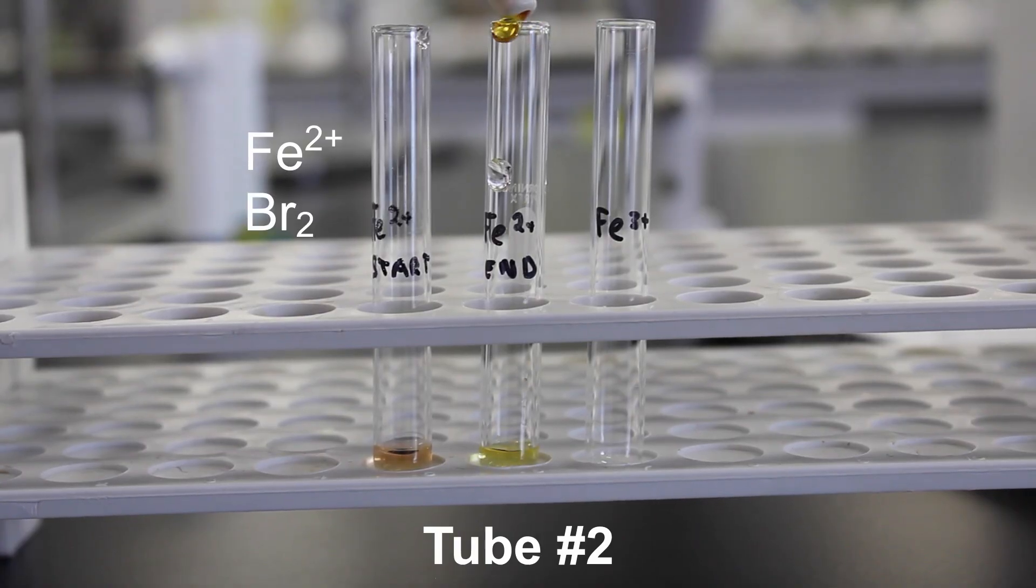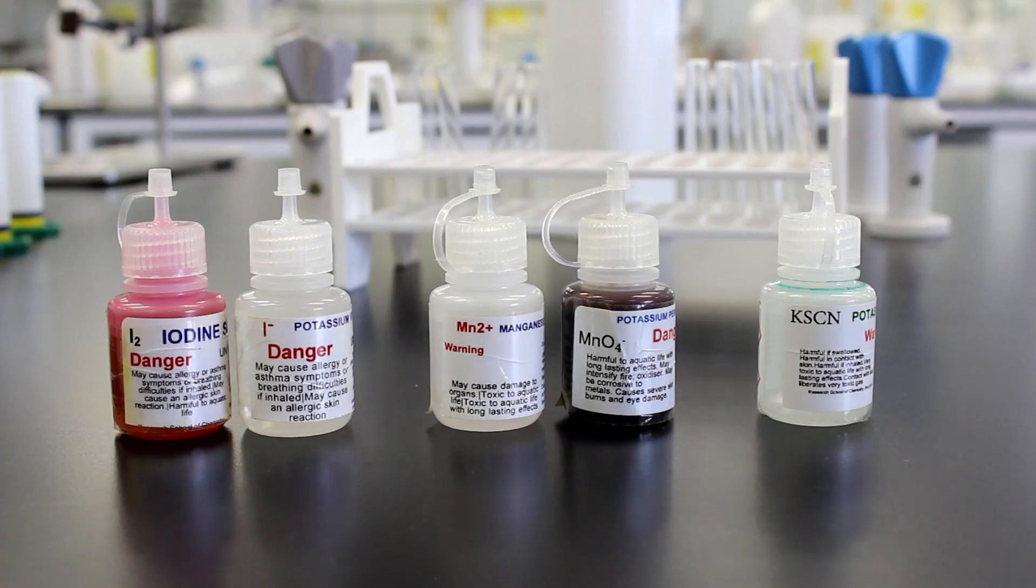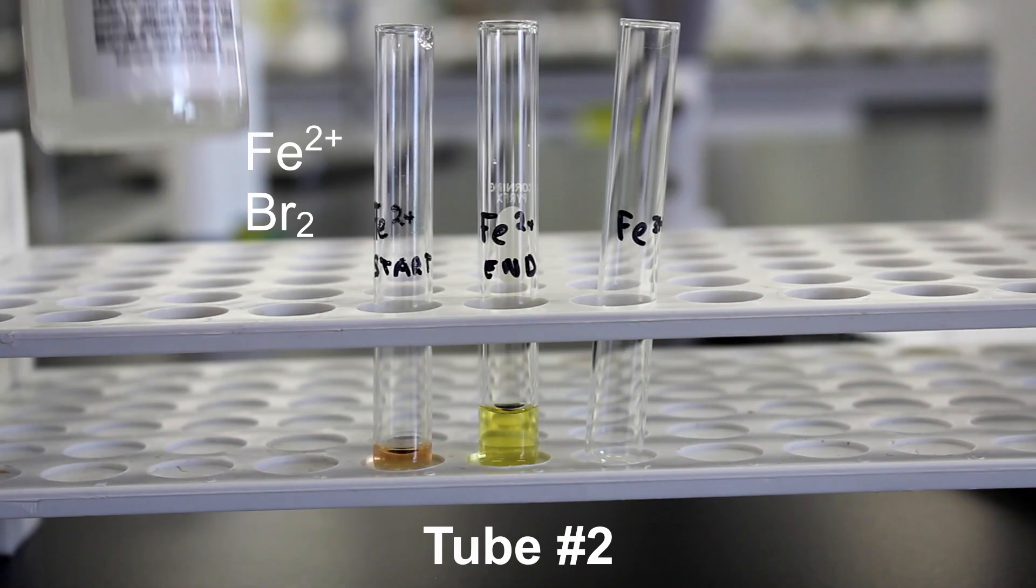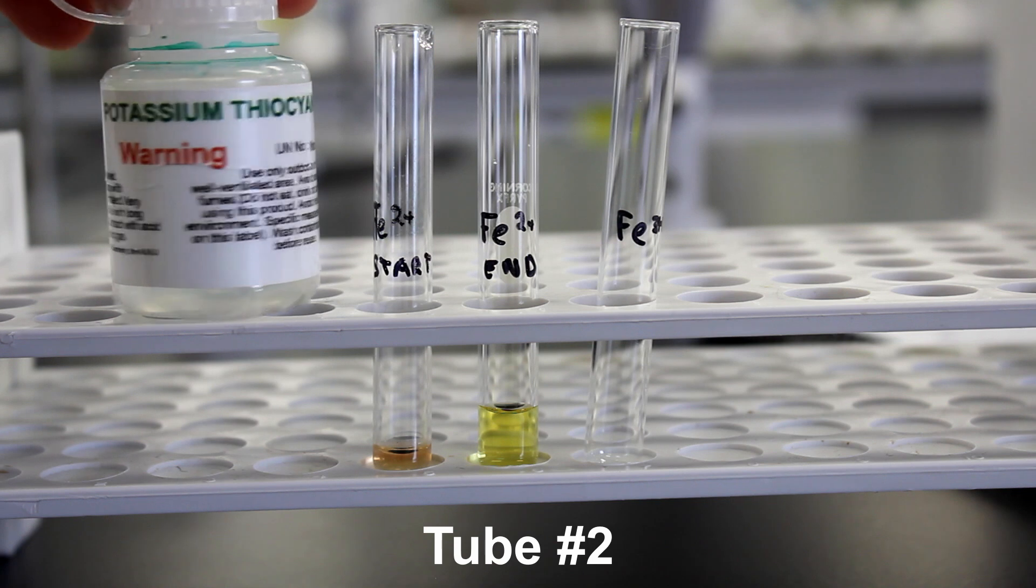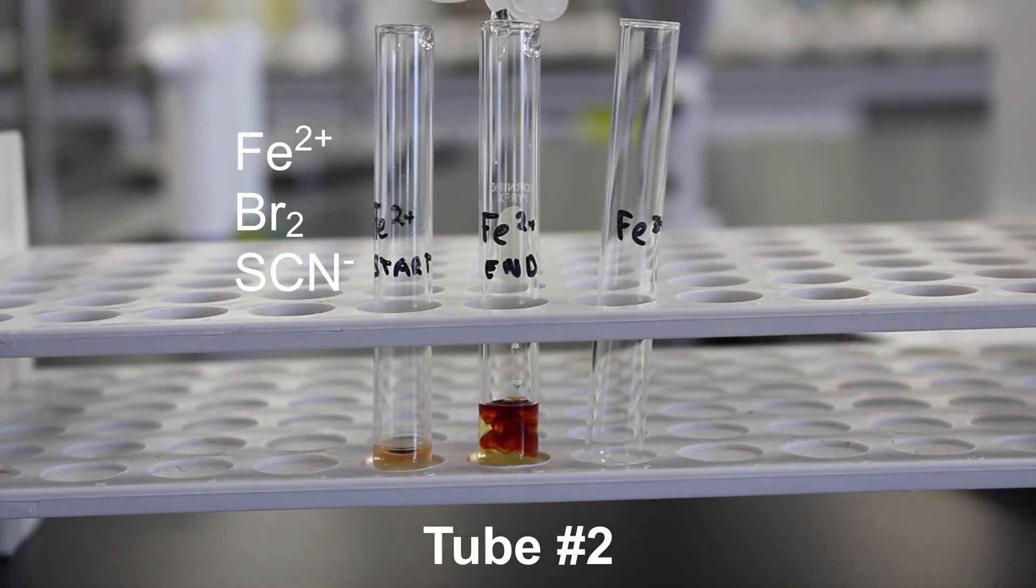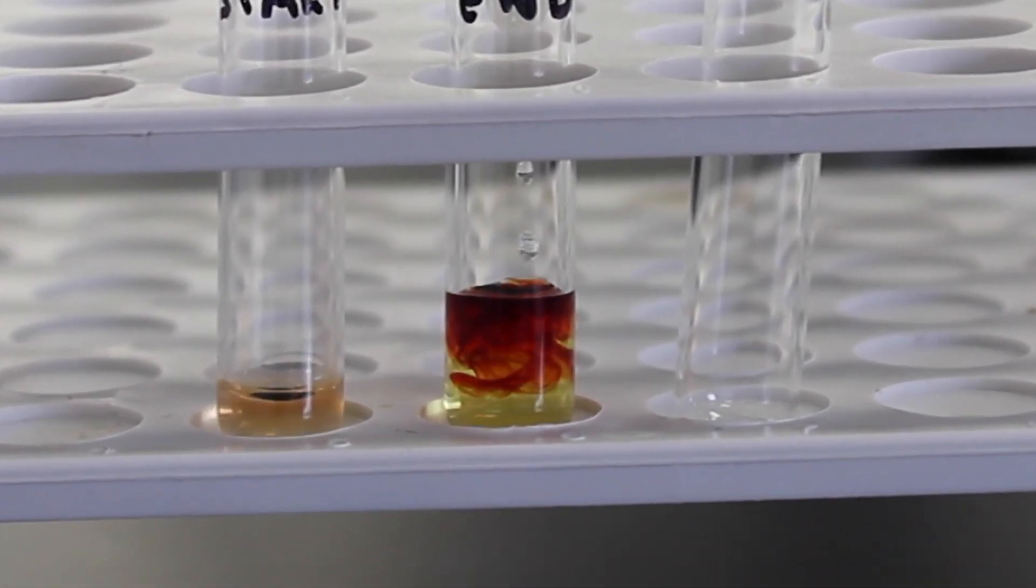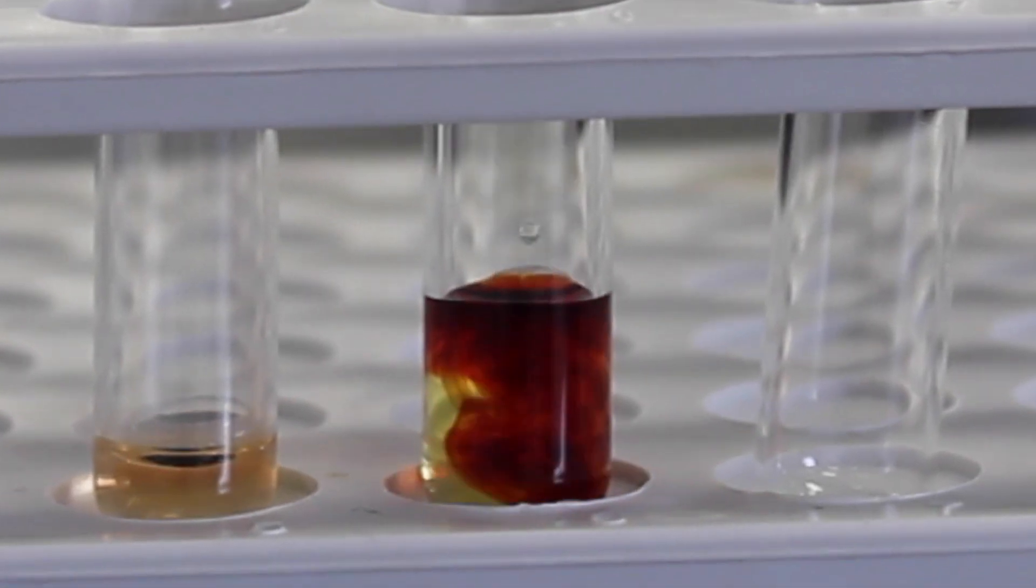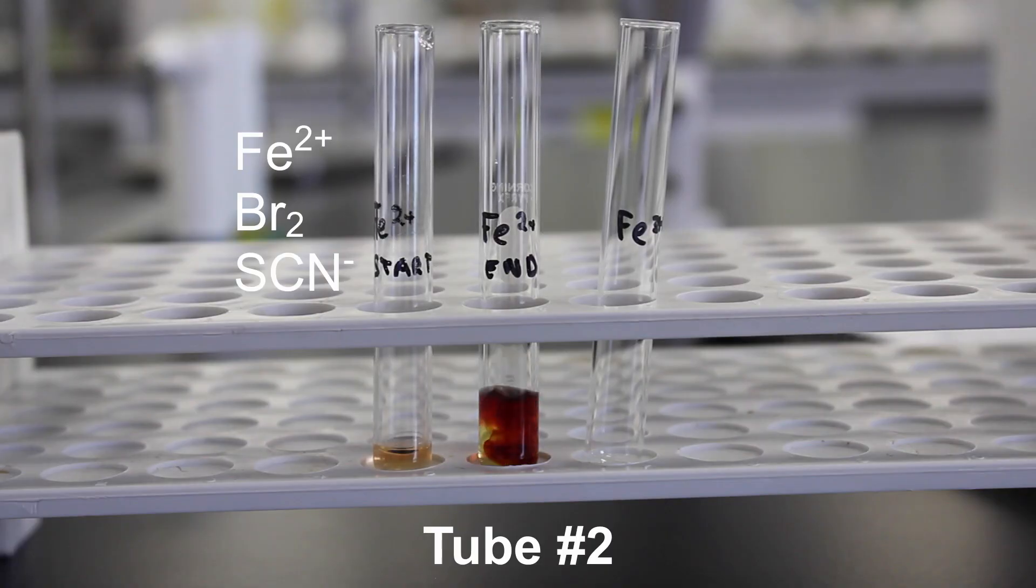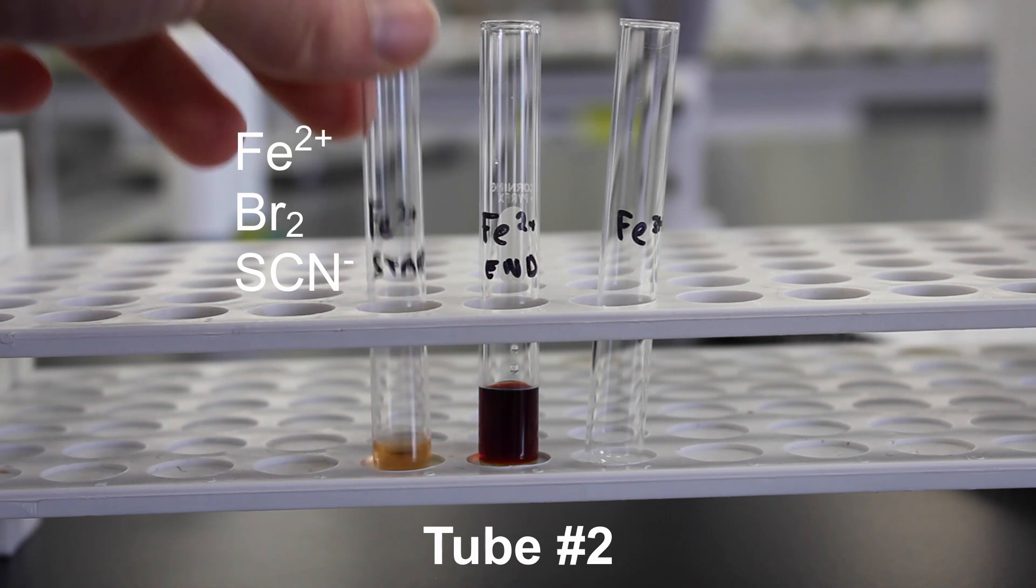Now we're adding in some bromine water to our test tube with iron 2+. When we add the potassium thiocyanate, the change in colour will indicate whether or not iron 3+ has been formed. As you can see, the solution has turned very dark red in comparison with our start solution of just iron 2+ ions.